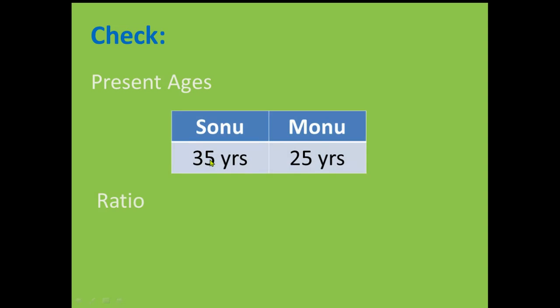So let us now check our problem. Present ages: we supposed them to be 35 years, which is 7 times 5, and 25, which is 5 times 5. And the ratio will be 35 over 25, which is 7 to 5, which was given in our statement 1 of the problem. So this much is correct.